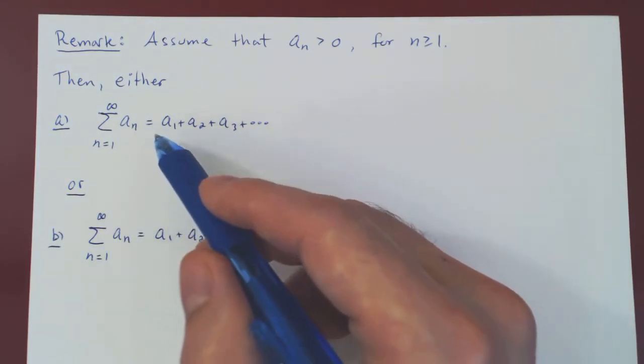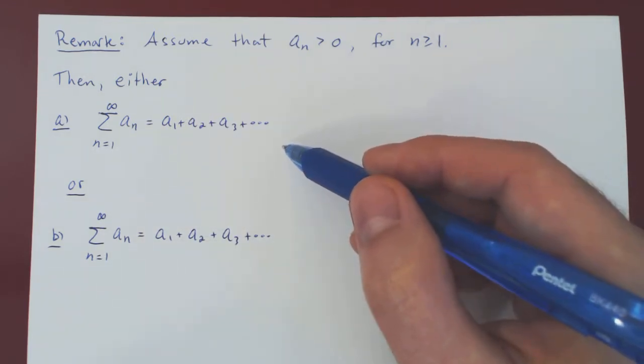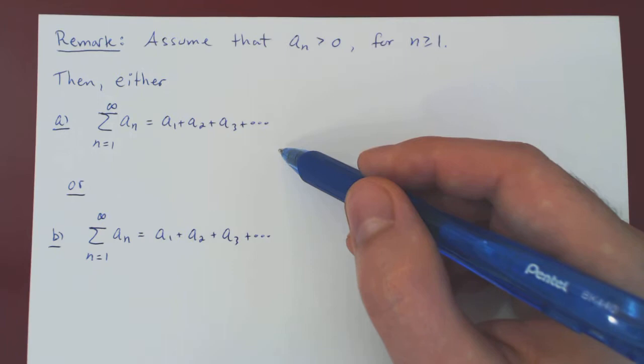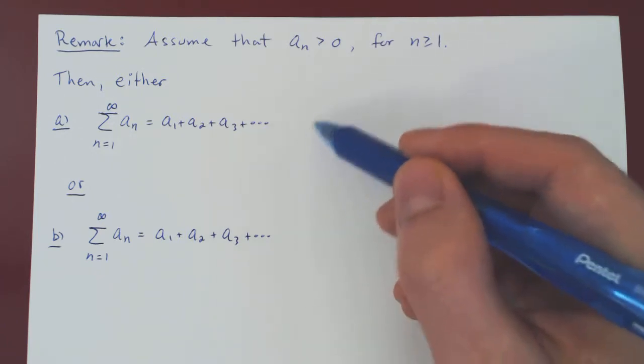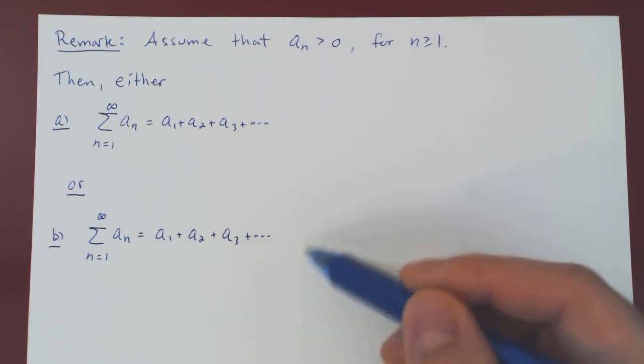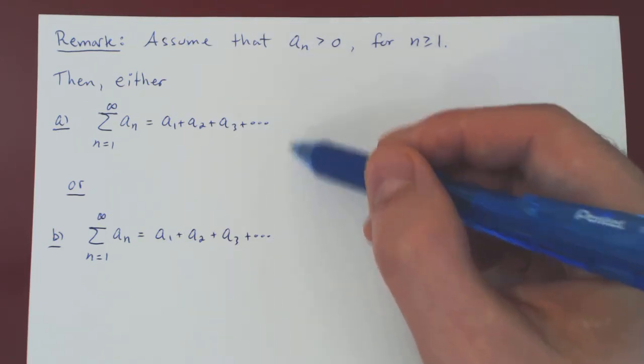So the corresponding sequence of partial sums is an increasing sequence. And if you think about it, there are therefore only two options. Either our sequence of partial sums is bounded, or is unbounded. These are the only two possibilities.